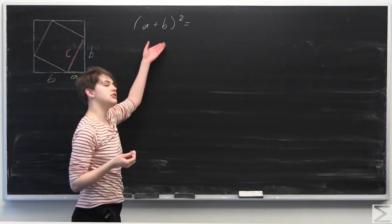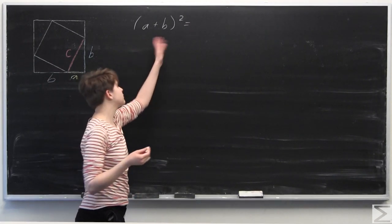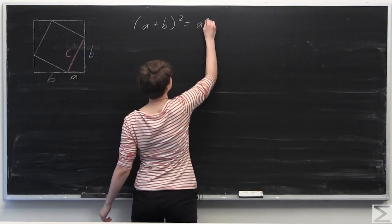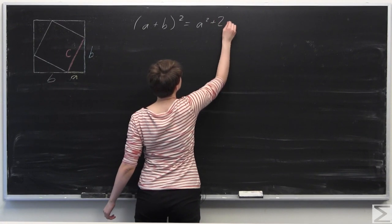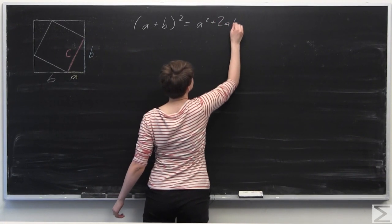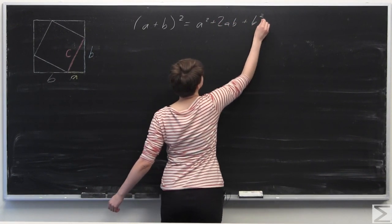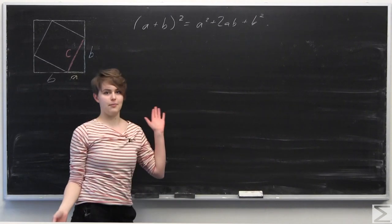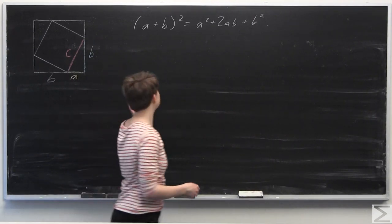We can FOIL this out to get A² + 2AB + B².